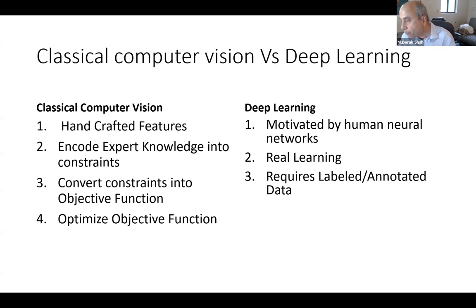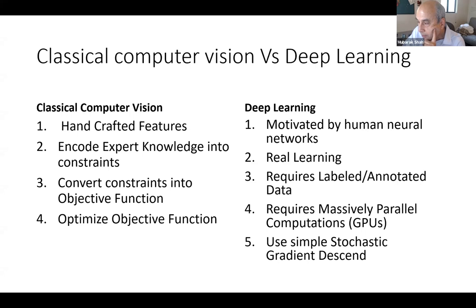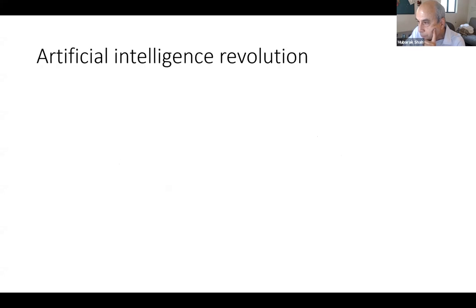Most deep learning work is supervised learning — we need labels and annotations. We give the computer labeled data, for example images of dogs labeled 'dog,' and train it. Next time we give another image, it will say 'dog.' It requires a lot of computation, which is why we use GPUs — graphical processing units with massively parallel processing. The optimization method uses gradient descent, and this has resulted in what is called the artificial intelligence revolution.